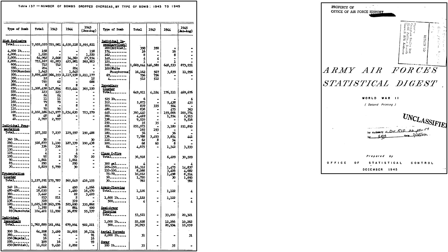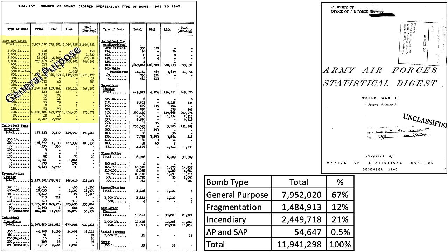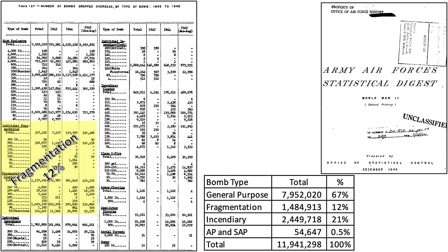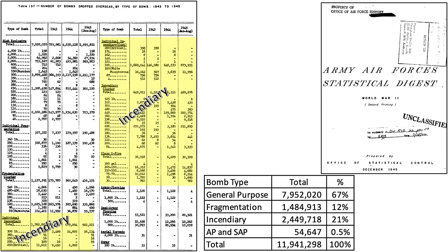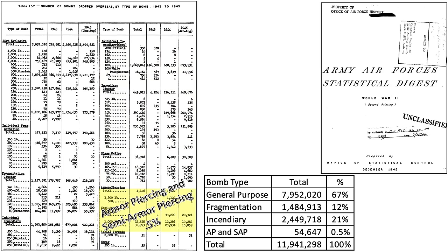This table lists the type and quantity of bombs dropped by the U.S. during the years 1943 through 1945, from a 1945 Office of Statistical Control document titled Army Air Forces Statistical Digest. This includes general purpose at 67 percent, fragmentation at 12 percent, incendiary at 21 percent, and armor-piercing type at 0.5 percent.